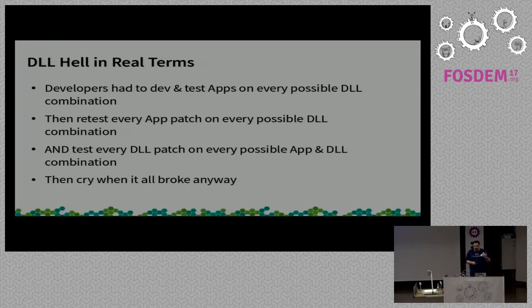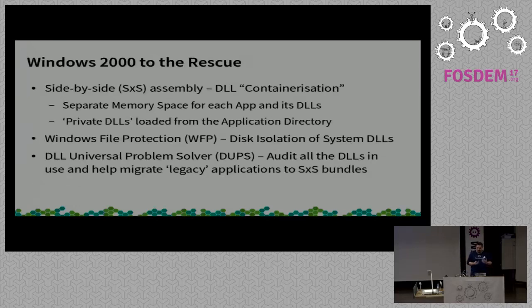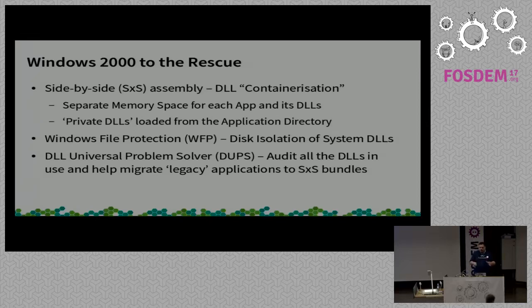Then Windows 2000 came along, and Microsoft claimed they fixed it. And in many ways, they did. They said: okay, we realize this is a mess. We're going to stop putting all of our shared libraries in one big dumping ground in C:\Windows or C:\Windows\System, and we've got this wonderful thing called side-by-side assembly — which is basically containerization — obviously with lack of sandboxing, but generally speaking it completely changed how you practically delivered applications on a Windows system.